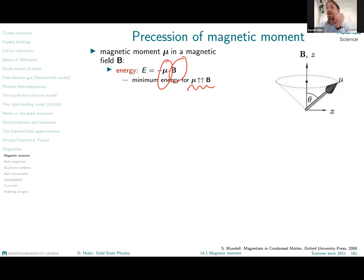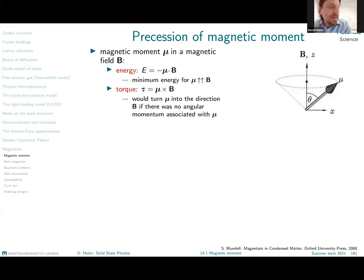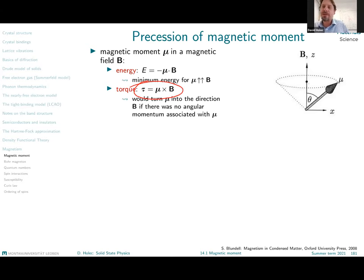There is a mechanical moment connected with the magnetic moment. The torque this magnetic moment experiences, from Maxwell's equations, is expressed as the cross product of the magnetic moment and the magnetic field — this is the force that tries to turn the magnetic moment into the field direction, minimizing total energy. From mechanics, a torque causes a time change of the angular momentum — this is the angular version of Newton's second law, where the time derivative of momentum equals the force.